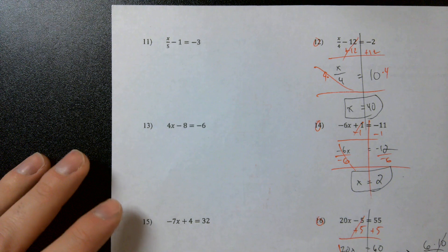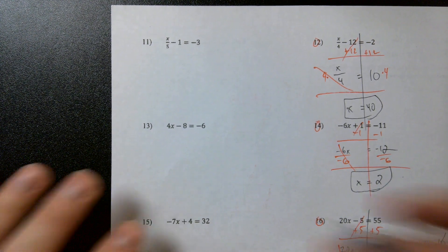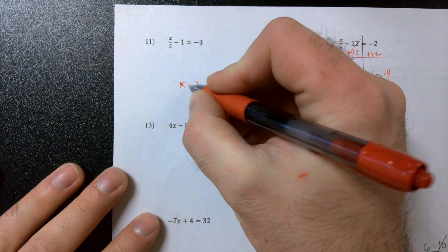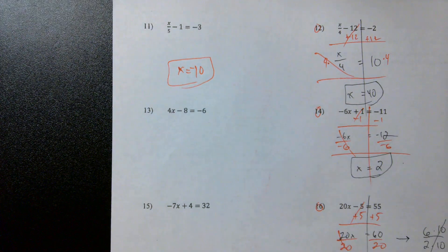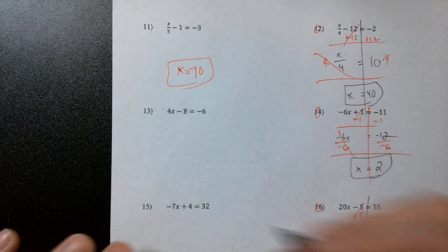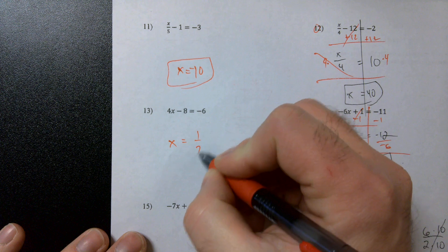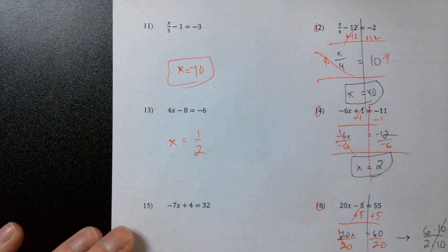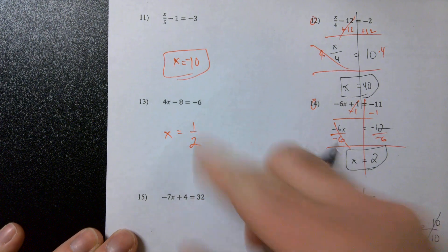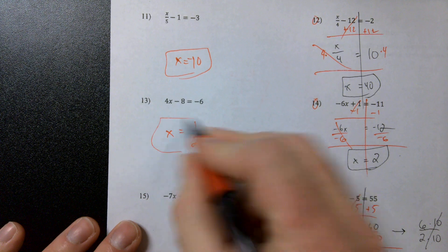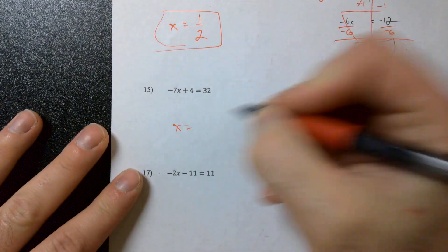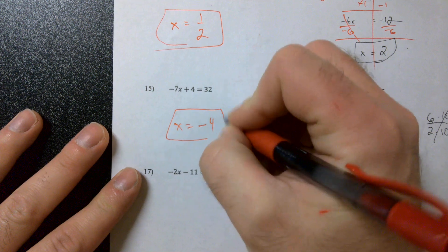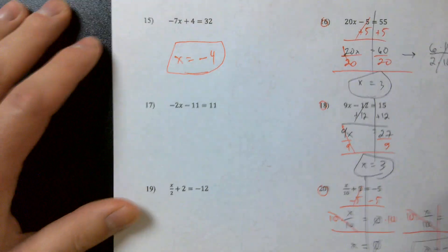Let's quickly go through the answers here. What did you get for number eleven? x equals negative ten. Sounds right to me. What about thirteen? x equals one half. x equals one half, good. We end up with two over four here, then we just cancel out those twos and we get one half. Number fifteen, you get x is equal to negative four, good, everyone's right. What about seventeen?